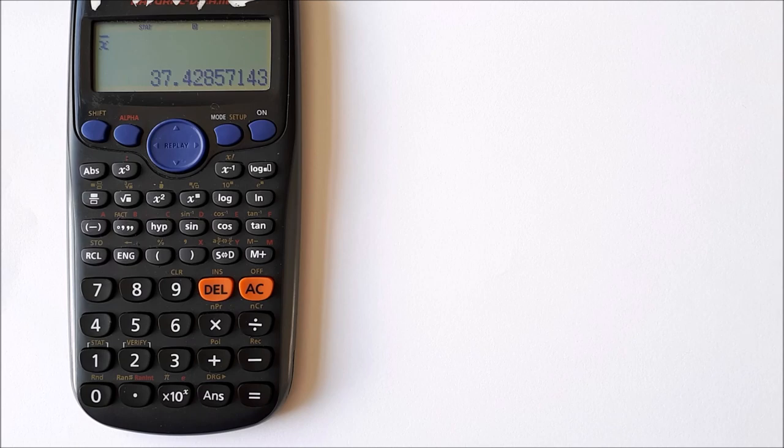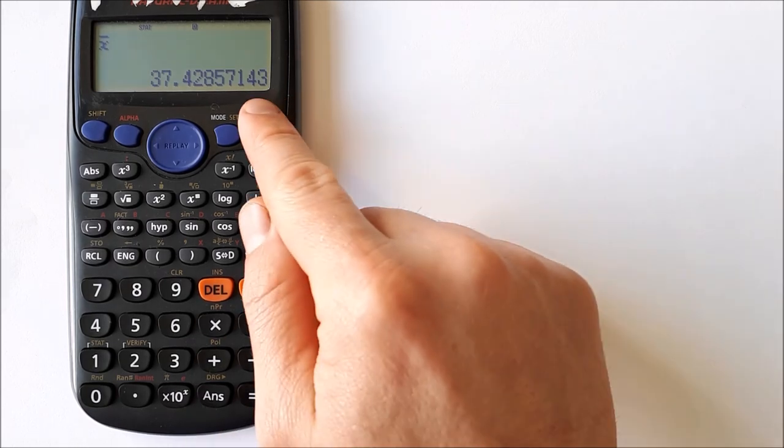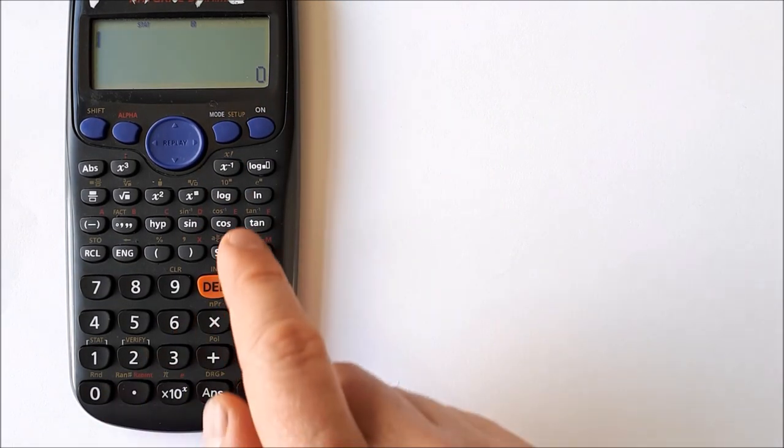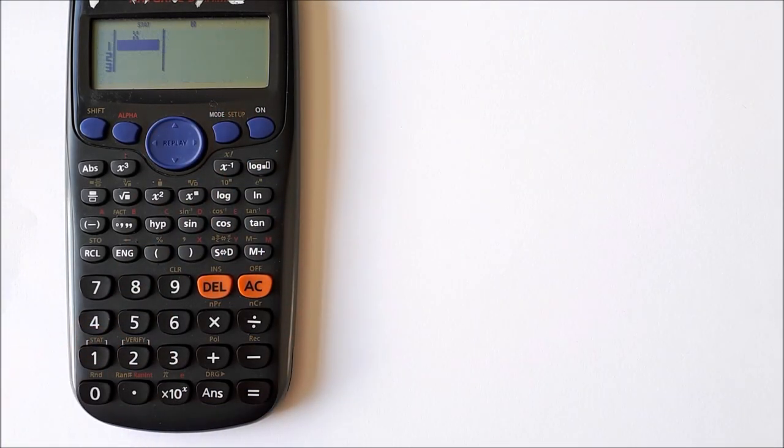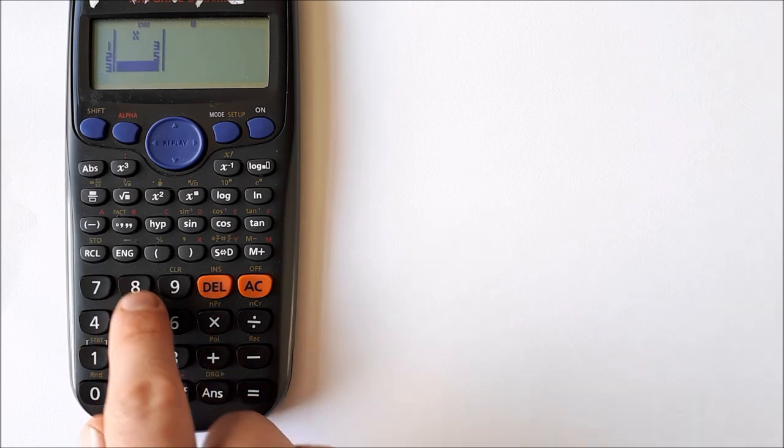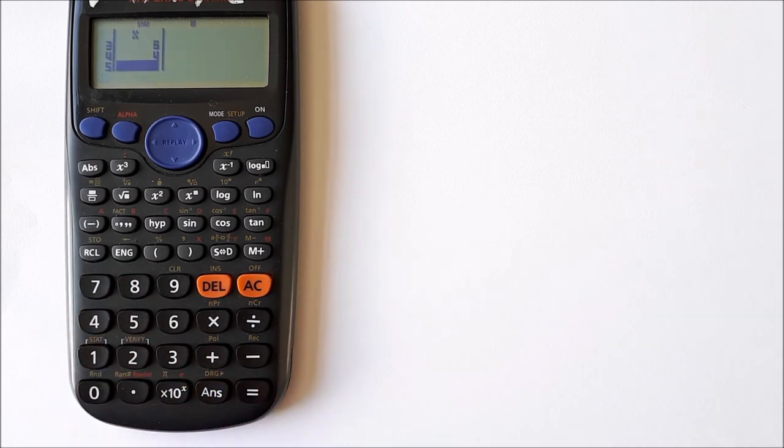Okay, let's just do one more. So it was mode, stats, one, so that gives us this table option here. So let's just choose some smaller numbers. Let's say 3 equals, 5 equals, 8 equals, 4 equals. So this is the average of 3, 5, 8, and 4.